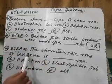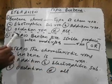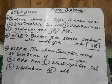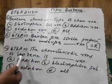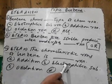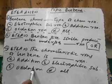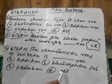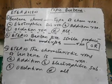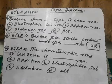A third related question is: 'The characteristic reaction of benzene is dash.' All three questions are related to each other. The options are: addition reaction, electrophilic substitution reaction, oxidation reaction, or all of these.